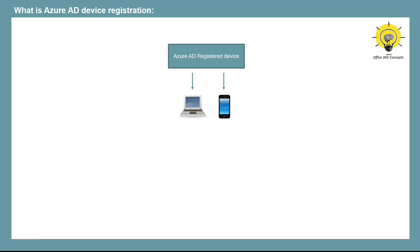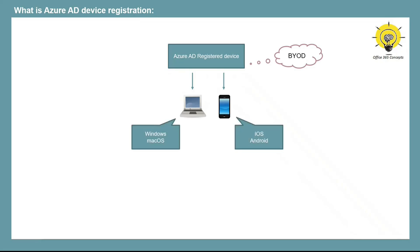Azure AD registered devices are personal devices, also called bring your own device (BYOD). The supported operating systems are Windows, Mac, iOS, or Android. If a user has a personal computer or personal mobile phone, he can register that device with Azure AD. The user will log into these devices with his personal account, but during registration he will have to enter his Azure AD credentials.